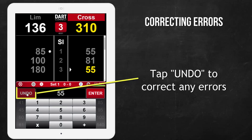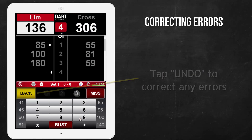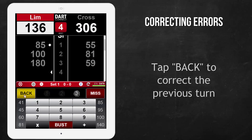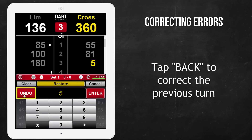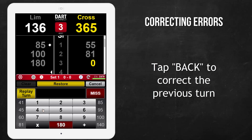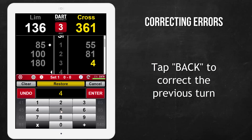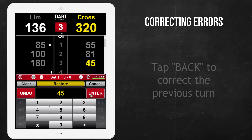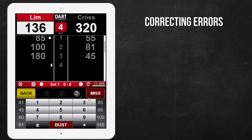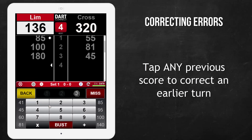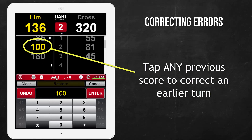Use the Undo button to make a score correction. If you've already hit Enter, use the Back button to go back and correct the previous score. If you require a correction to an earlier turn, tap any number to edit any previous score.